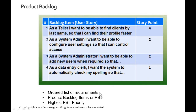The product backlog is simply a collection of requirements from the business, written in terms of what are called user stories. For example: 'As a teller, I want to be able to find clients by last name so that I can find their profile faster.' User stories define the role, what you want to do, and why — for example, 'As a system admin, I want to be able to configure user settings so that I can control access.'